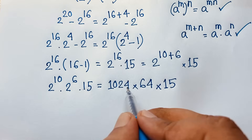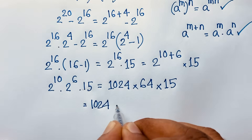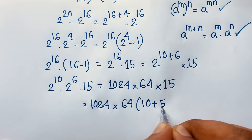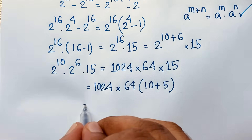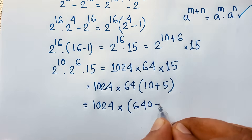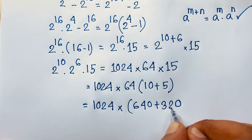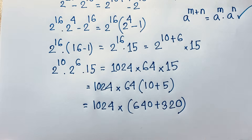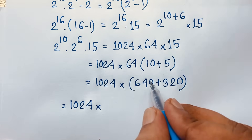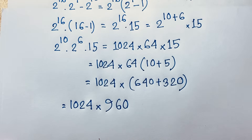Now we have 1024 times 64 times 15. I split 15 as 10 plus 5. So 64 times 15 equals 64 times 10 plus 64 times 5, which gives 640 plus 320. That equals 960. So now our expression is 1024 times 960.